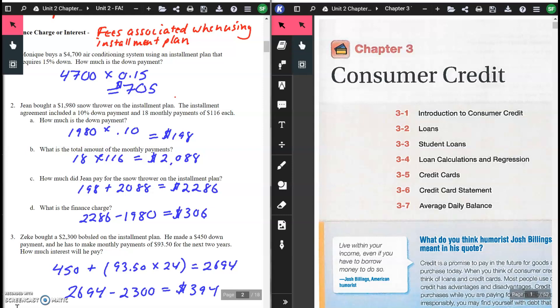Number two: Gene bought a $1,980 snow thrower on the installment plan. The installment agreement included a 10% down payment and 18 monthly payments of $116 each. How much is the down payment? You take your $1,980 times 10% for your down payment of $198. The total amount in monthly payments - 18 monthly payments at $116 gives you $2,088 in monthly payments.